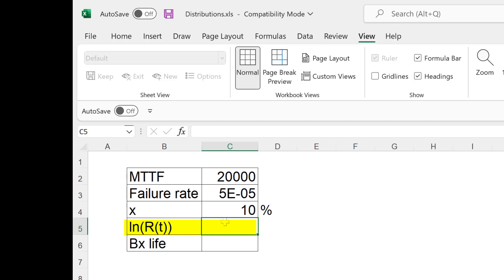The ln of R of t will be equal to ln times bracket 1 minus percent of failure divided by 100. So that is equal to minus 0.1054. That is ln of reliability of 0.9.